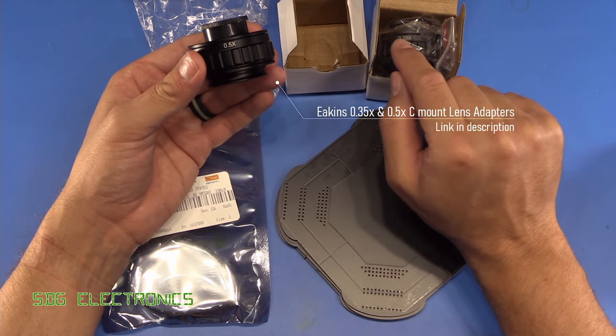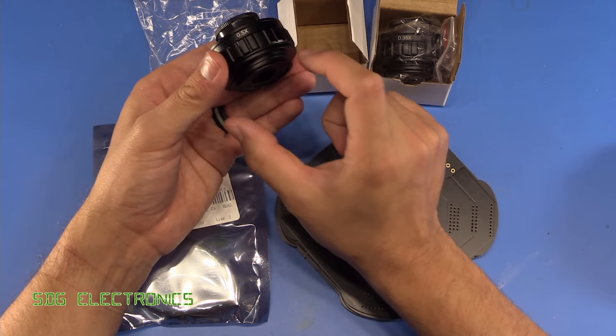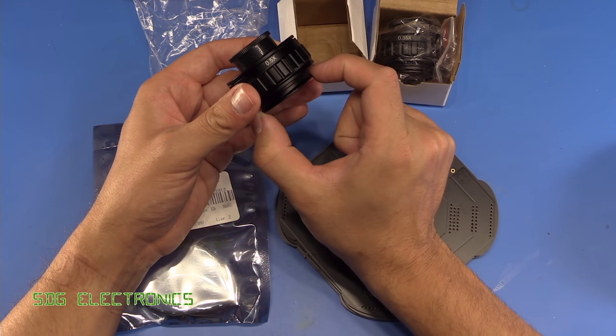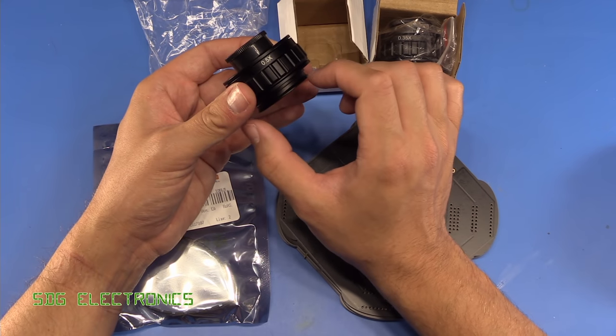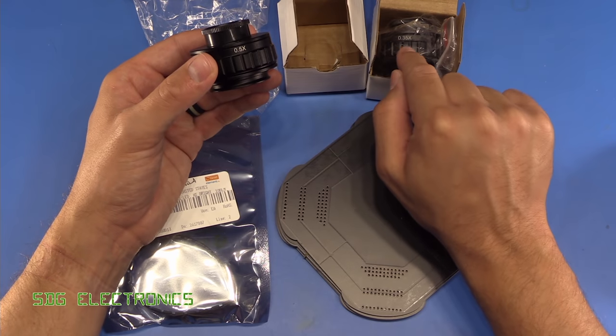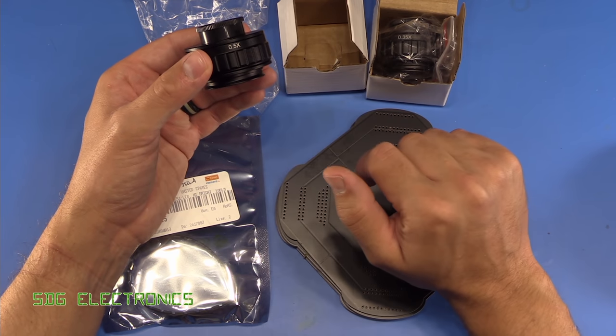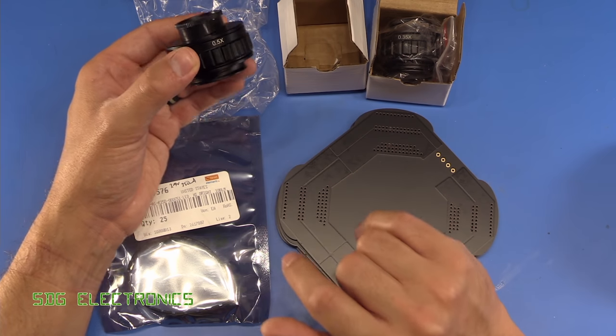So we've got a 0.5x and a 0.35x camera attachment. You do have to be careful whether these are the correct type to fit the camera port on your microscope, but they do have a few different types. We'll have a little look at these and what the difference is between the 0.5 and the 0.35, because people do often get confused and there is a trade-off in image quality.